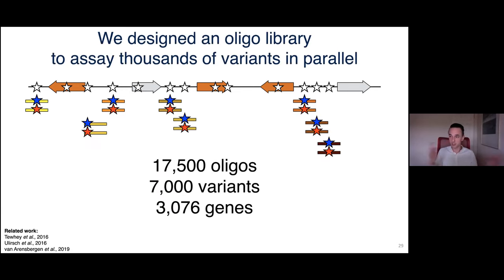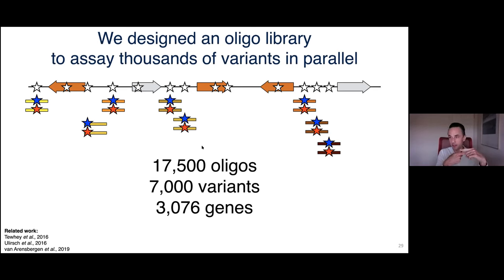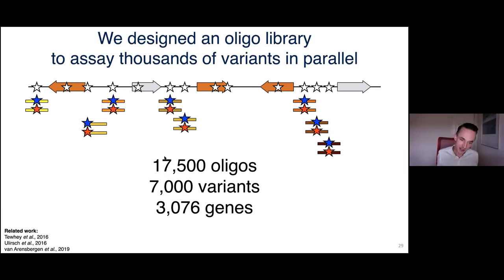For a given variant, we synthesized two synthetic DNA oligos, each 140 bases long and centered on the variant. The two oligos are identical except for that one sequence difference. They get cloned in front of a reporter gene — yellow fluorescent protein — and the expression of that reporter gives a measure of the relative allelic activity of the two variants.